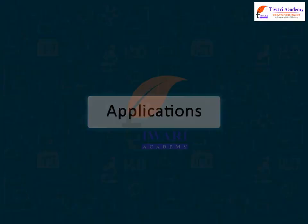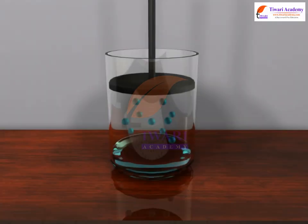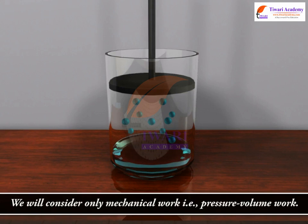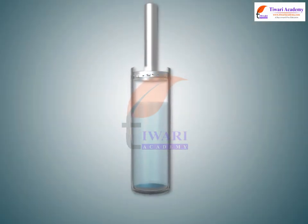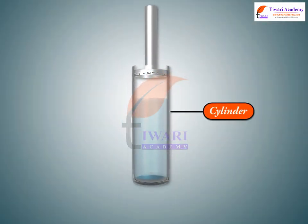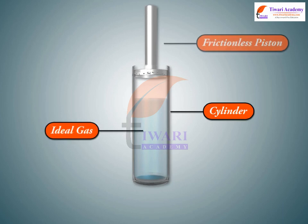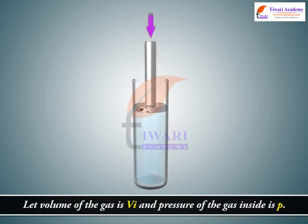Applications. Work: We will consider only mechanical work, i.e. pressure-volume work. Let us consider a cylinder containing 1 mole of an ideal gas fitted with a frictionless piston. Let the volume of the gas be Vi and the pressure of the gas inside be P.